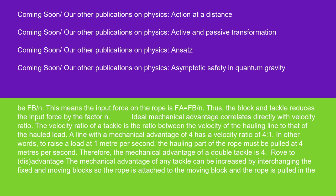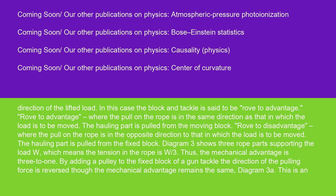Rove to advantage: The mechanical advantage of any tackle can be increased by interchanging the fixed and moving blocks so the rope is attached to the moving block and the rope is pulled in the direction of the lifted load. In this case, the block and tackle is said to be rove to advantage, where the pull on the rope is in the same direction as that in which the load is to be moved. The hauling part is pulled from the moving block.